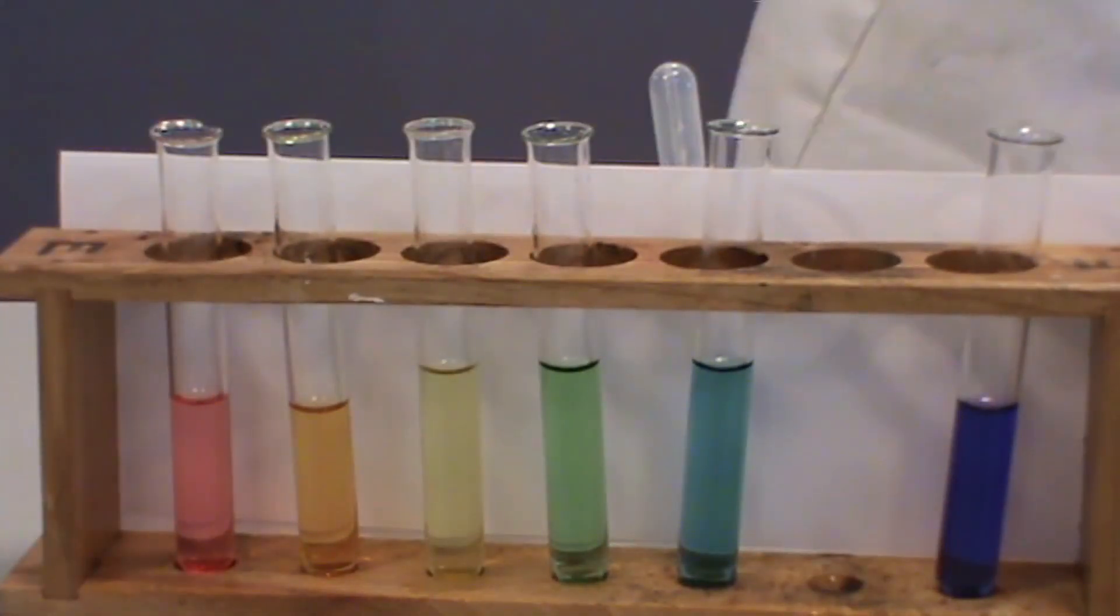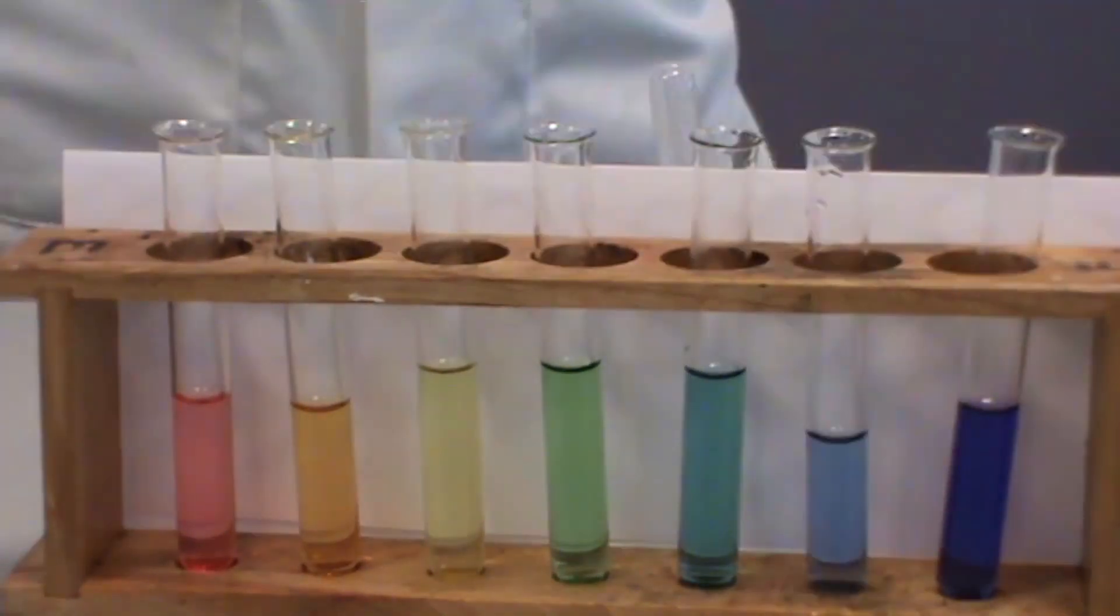At the end of the experiment, we can see that we now have seven test tubes showing a complete range of colours. These go from red, orange and yellow for acidic solutions, green for neutral solutions and blue-green, blue and purple for alkaline solutions.